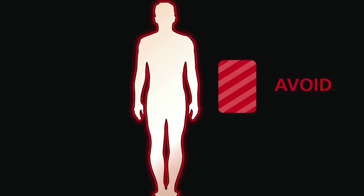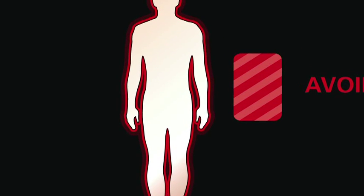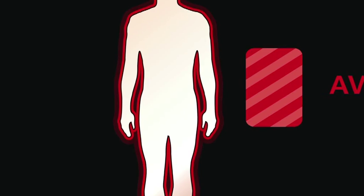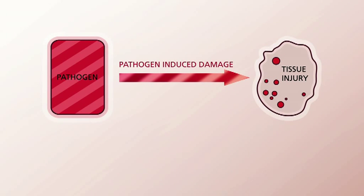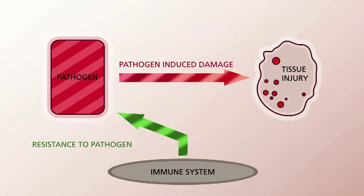We try to avoid getting infected, and that's why there are certain smells that we find repulsive — because they indicate, for example, that food is spoiled and we would not eat it. During an infection we can use very different strategies to deal with infections. We can try to get rid of a pathogen, and that's what the immune system does. That strategy is called resistance.